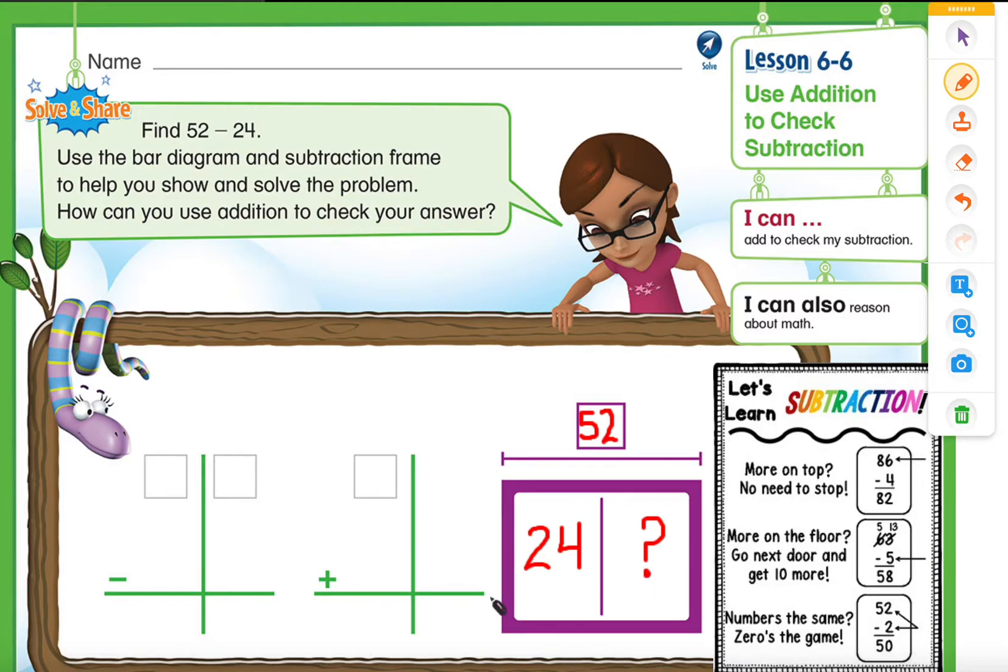So let's write up our numbers. 52 minus 24. Alright, so I have my subtraction poem right here.